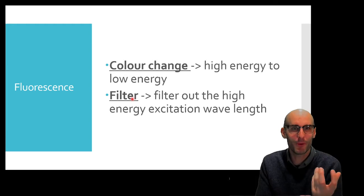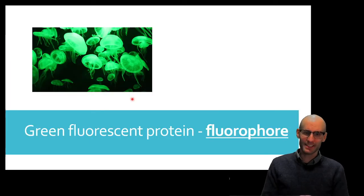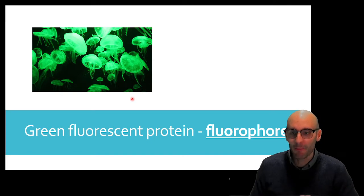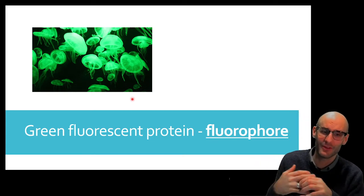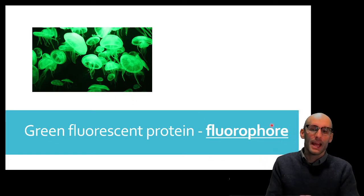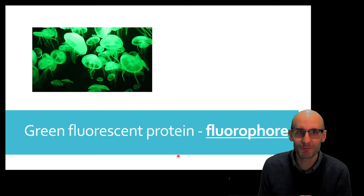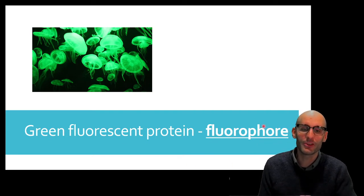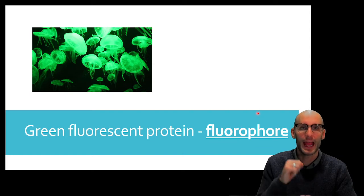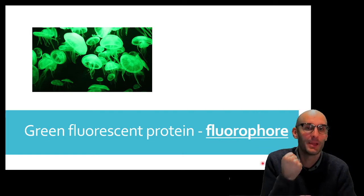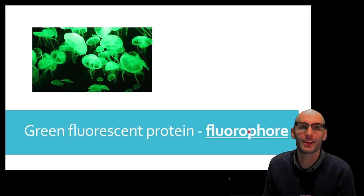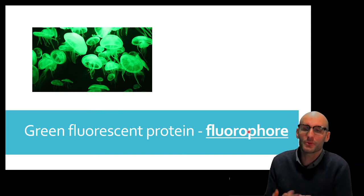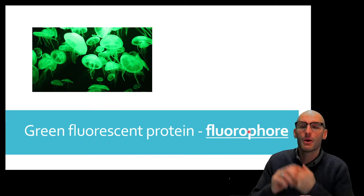But how do we get this color change in biological research? Well, there were a couple of Nobel Prizes associated with this, and one really good example is the green fluorescent protein — the first protein we ever discovered that was fluorescent. This is a protein we can use in research to label things. When we do that, it's called a fluorophore — that's a fluorescent thing. It could be a dye or a protein, but the thing we use to fluorescently label something in biological research we call a fluorophore.